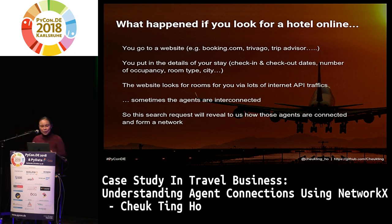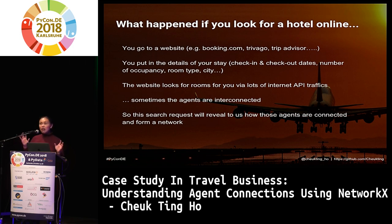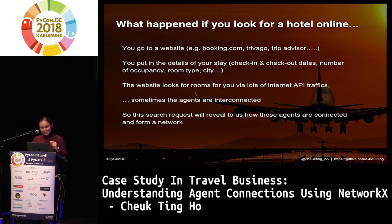Sometimes the tricky thing is these agents are interconnected with each other. For example, let's say Booking.com gets your request but can't find the hotel directly — maybe it's a specific resort your friend recommended — so Booking.com might ask Trivago: do they have it? So maybe they're interconnected. From all these search requests — and there are a lot every day because everybody loves to travel — we can actually see how they're connected, how all these agents communicate with each other via API.